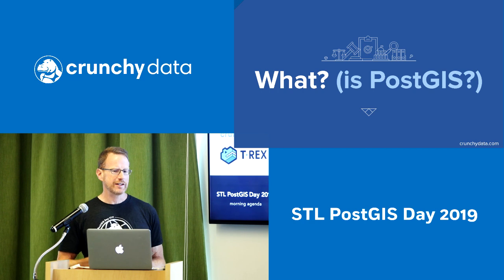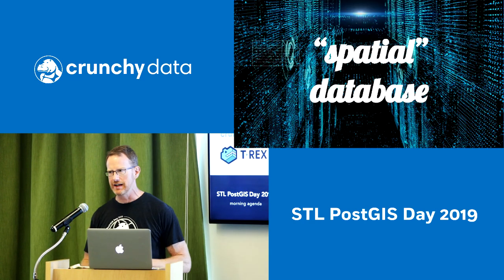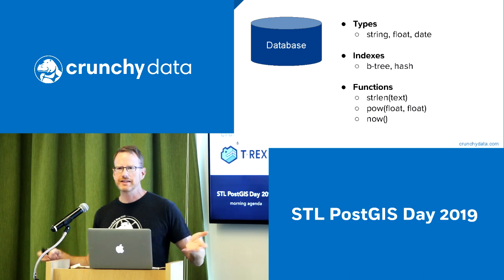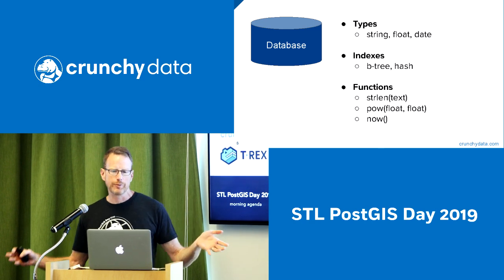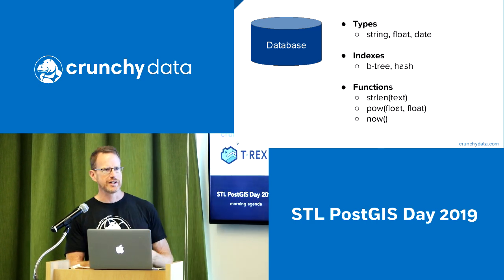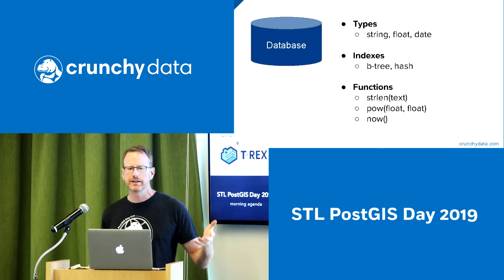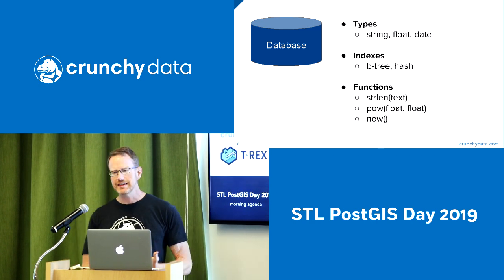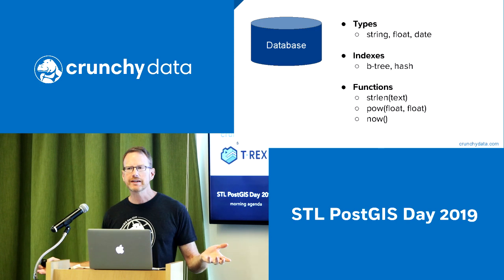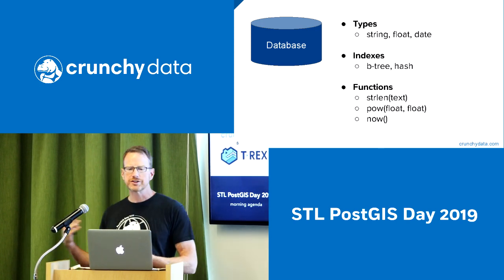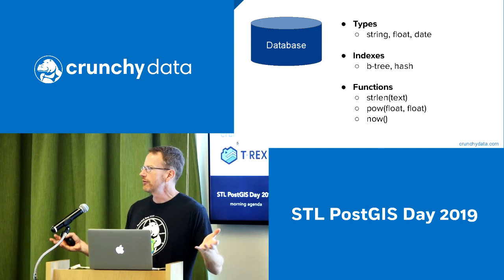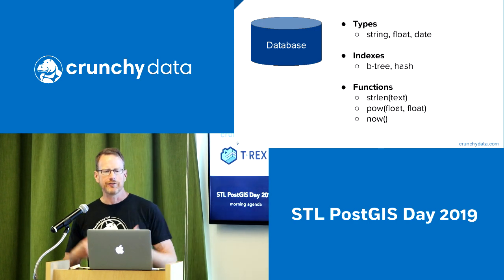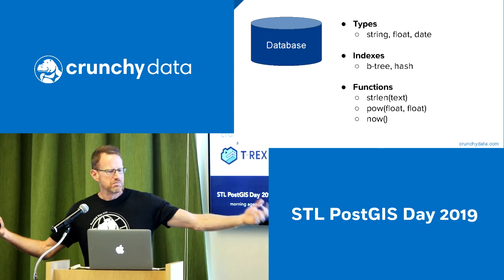What am I talking about when I say PostGIS? I'm talking about a spatial database — which is to say, a database. A database is a piece of software built for random access of large corpuses of data and summary of that data. In order to do that, it provides you with some primitive types. In a standard database, that would be strings, floats, dates, things like that.